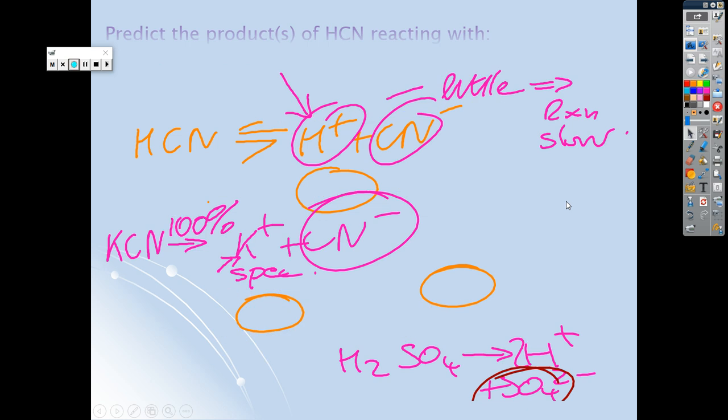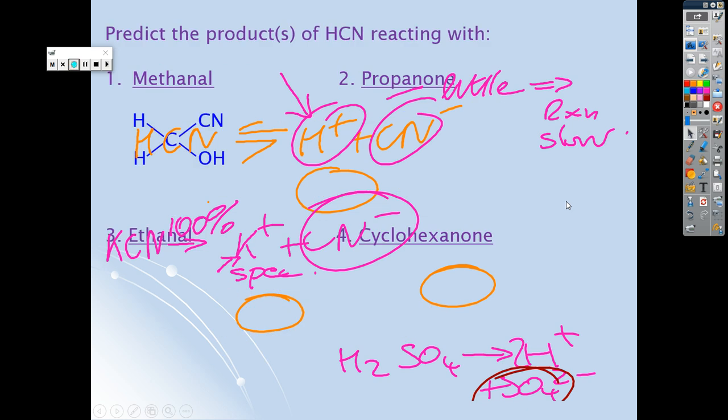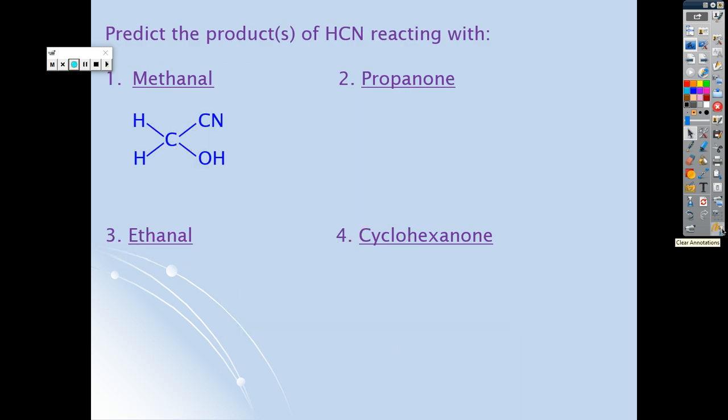What I want you to do is take a second and predict the products of hydrogen cyanide with the three compounds. You should be able to do one, two, and three. If you can do four, all the better, but it's probably a little bit beyond you just at the minute. Pause the video, have a go with those, and then I'll put them on.